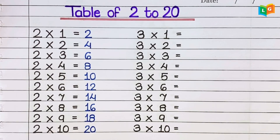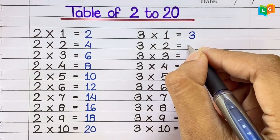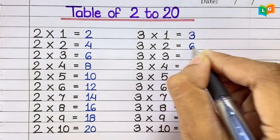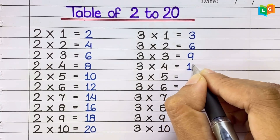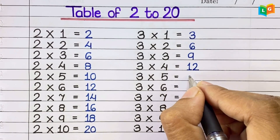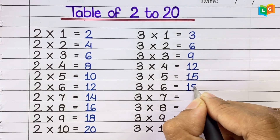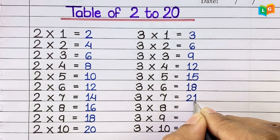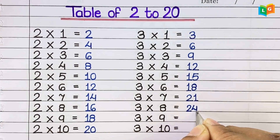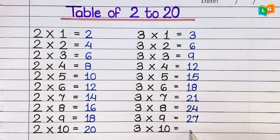Now let's see table of 3. 3 1s are 3, 3 2s are 6, 3 3s are 9, 3 4s are 12, 3 5s are 15, 3 6s are 18, 3 7s are 21, 3 8s are 24, 3 9s are 27, 3 10s are 30.